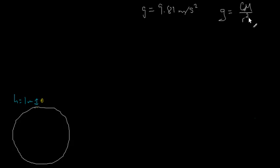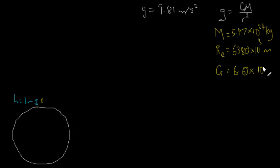And we can calculate this because I just googled for the values. The mass of the earth is 5.97 × 10²⁴ kilograms, and the radius of the earth is 6380 × 10³ meters. And G, I also found this on Google, it's 6.67 × 10⁻¹¹ in SI units.